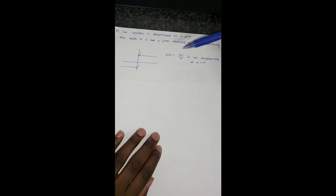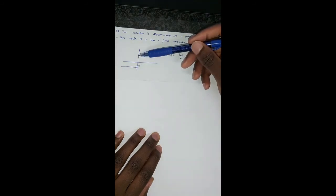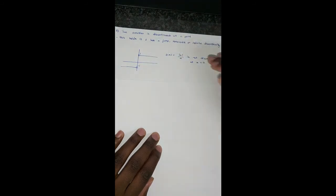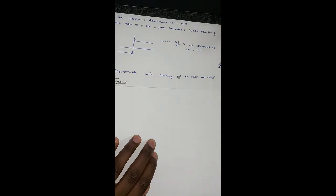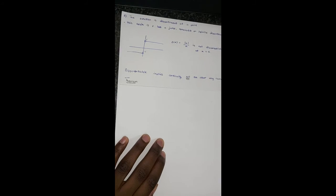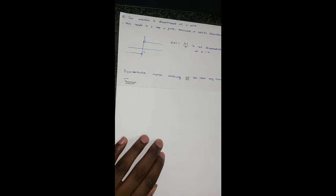For example, f(x) equals |x|/x is not differentiable at x equals 0 since there's a jump discontinuity there. So differentiability implies continuity, but continuity does not necessarily imply differentiability at that particular point.